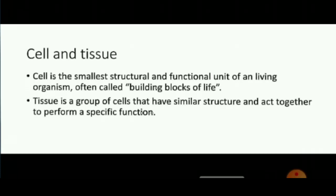What is a cell? A cell is the smallest structural and functional unit of a living organism, often called the building blocks of life. There are various examples of cells like nerve cell, blood cell, epithelial cell, and so on. What is a tissue? A tissue is a group of cells that have similar structure and act together to perform a specific function. Examples of tissue include nervous tissue, connective tissue, muscle tissue, and so on.